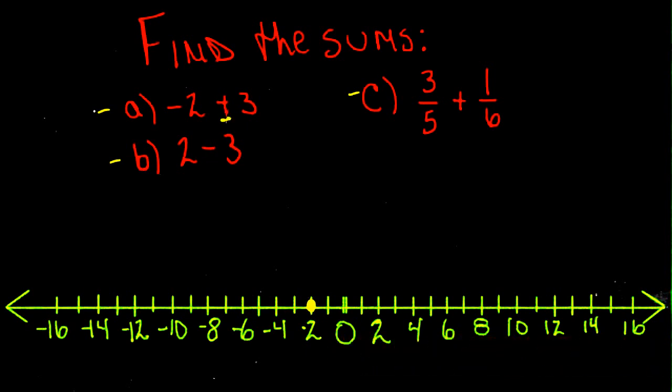And since we're adding 3 to that, when we add a number on the number line, we move to the right. So we're going to go 1, 2, 3 spaces to the right. We end up at positive 1, so negative 2 plus 3 is positive 1.